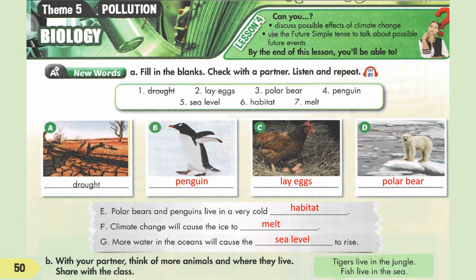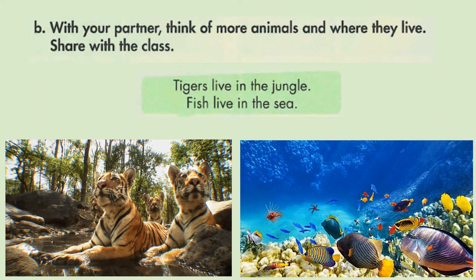Just for a recap, we have seven new words that we learned today: drought, penguin, lay eggs, polar bear, habitat, melt, and sea level. Now, I want you to think of more animals and where they live. For example, tigers live in the jungle and fish live in the sea. Think of more animals and where they live, and make a sentence like this.